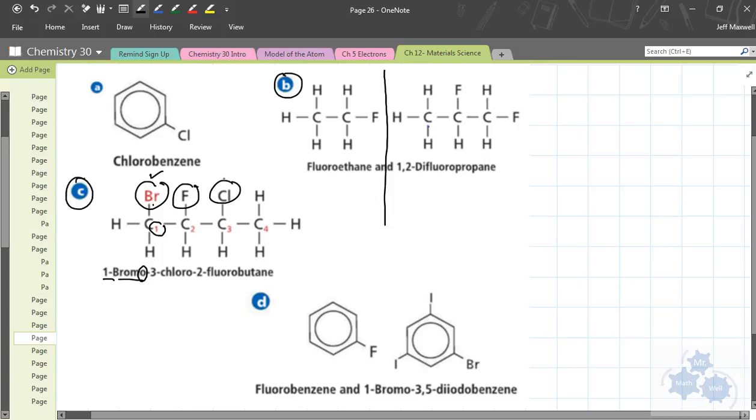Then which one do you name next? Well, you've got to name the chlorine next, because remember it's alphabetical. And that would be on carbon three then. So one bromo, three chloro. Then you have to name the other one. So two fluoro. There are four carbons in total, only single bonds, butane. So once again, we have one bromo, three chloro, two fluoro, butane.